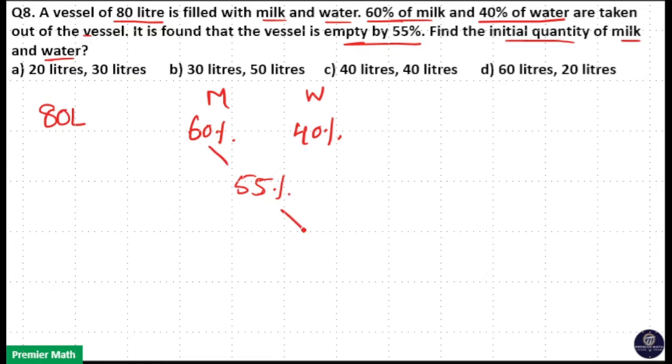60 minus 55 is equal to 5 percentage. You can write the number because you are taking the ratio. 55 minus 40 is equal to 15 percentage. So if you take the ratio 15 by 5 is equal to 3 and 5 by 5 is equal to 1.